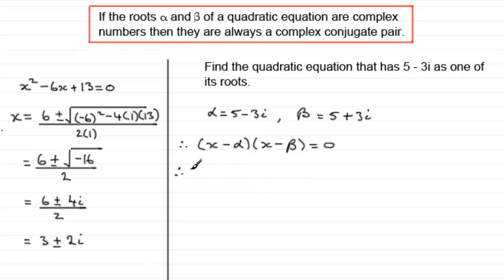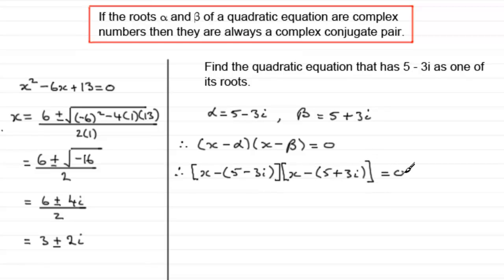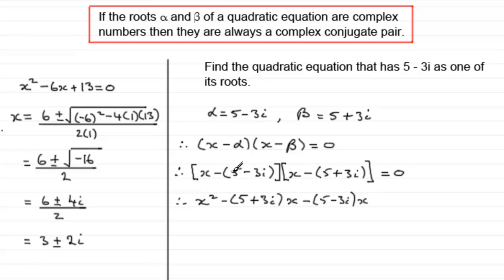So all we need to do is put in these values. I'm going to use square brackets here because we've got brackets within brackets. So we've got x minus (5 minus 3i) multiplied by x minus (5 plus 3i) equals 0. Expanding this out: x times x is x squared; x times minus (5 plus 3i) gives minus (5 plus 3i) times x; minus (5 minus 3i) times x; and then minus (5 minus 3i) multiplied by minus (5 plus 3i), which gives plus (5 minus 3i)(5 plus 3i), equals 0.